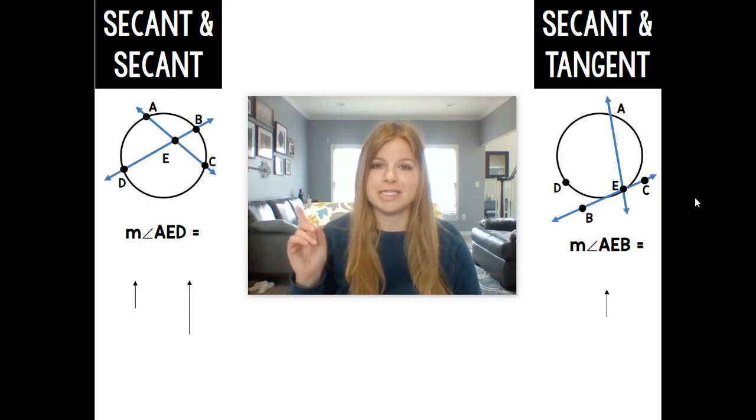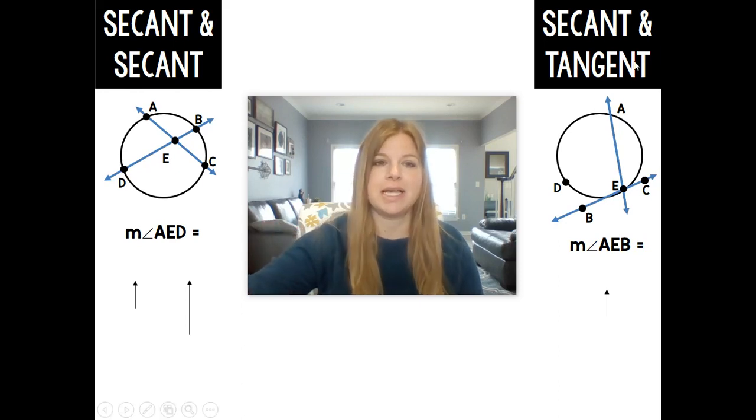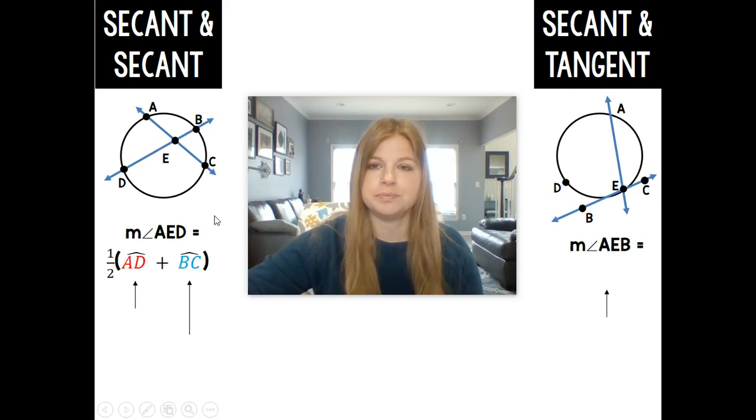Okay, first thing we're going to take a look at are secant and secant intersecting inside of the circle. So this says the measure of angle AED, so here this angle, is equal to one half the measure of its intercepted arc, so AED intercepts this arc AD.